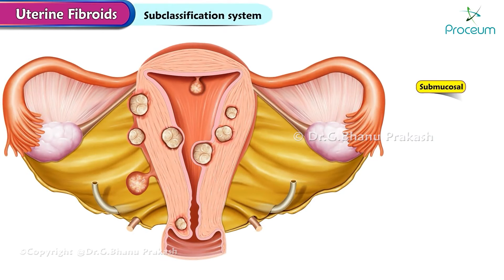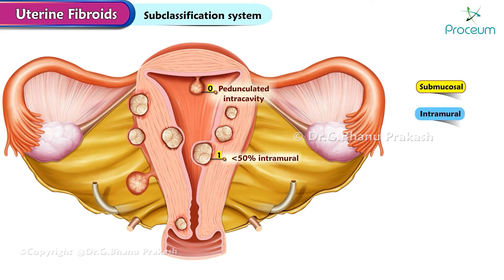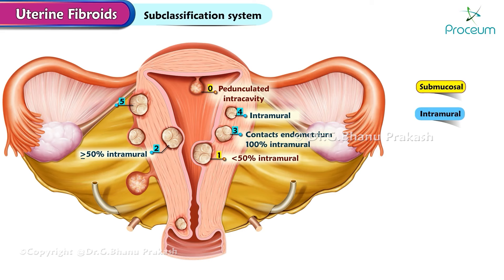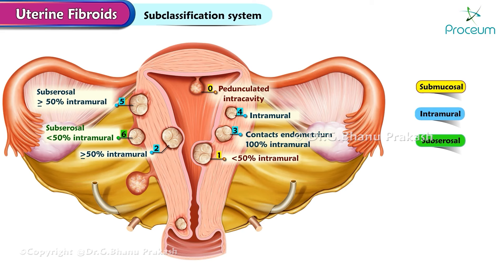The fibroid subclassification system is as follows: Submucosal 0; pedunculated intracavity 1; less than 50% intramural 2; greater than or equal to 50% intramural 3; contacts endometrium 100% intramural 4; intramural 5; subserosal greater than or equal to 50% intramural 6; subserosal less than 50% intramural 7; subserosal pedunculated 8; other - specify, for example cervical, parasitic.